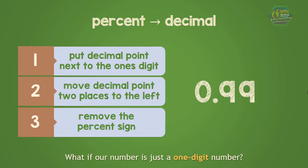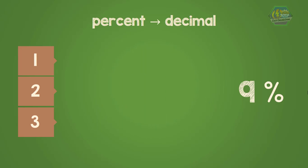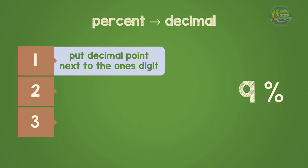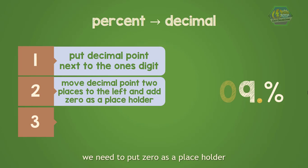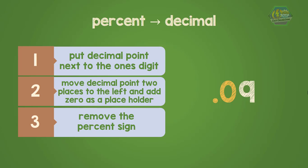What if our number is just a one-digit number? For example, convert 9 percent to decimal. Put the decimal point after the ones digit, then move two places to the left. Since the tenths place is missing, we need to put a zero as a placeholder. So the decimal value of 9 percent is 0.09.